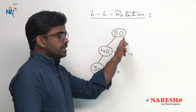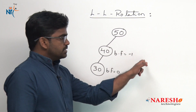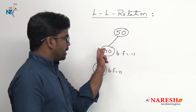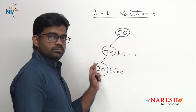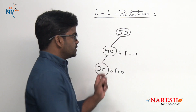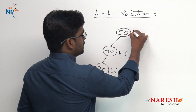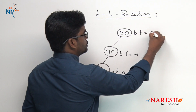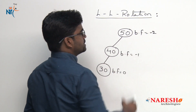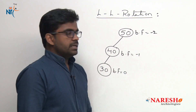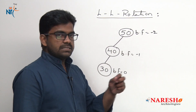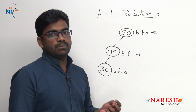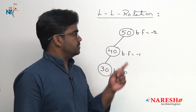Now, whenever we insert the value 30, the right side is 0 and the left side height becomes 2, so 0 minus 2 gives a balance factor of minus 2. We already discussed that if the balance factor is plus 2 or minus 2, that is an imbalanced tree.